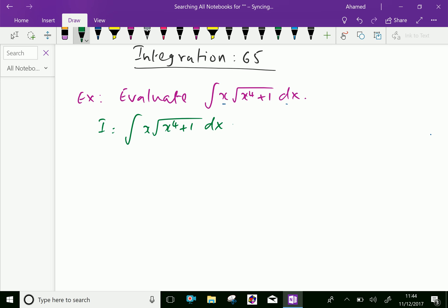For the standard result, we need x squared or the variable squared. Therefore, let x squared equal t. Differentiate both sides.